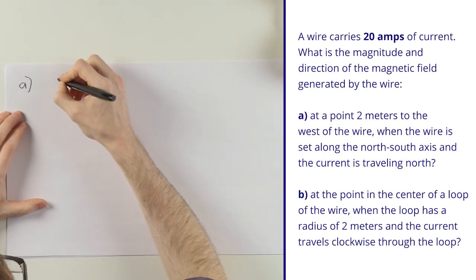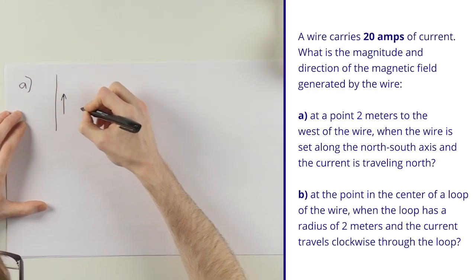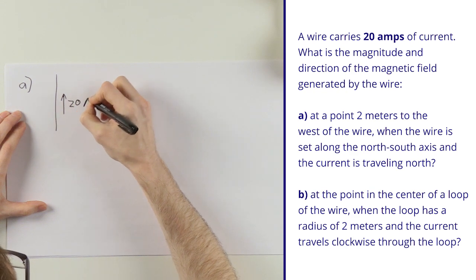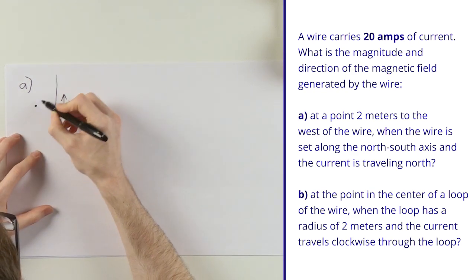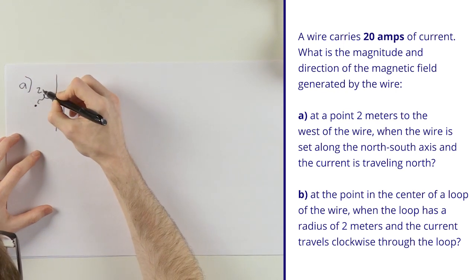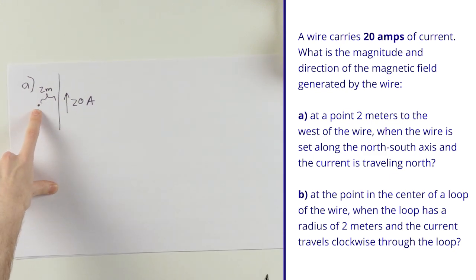Part a gives me a wire with a current moving up, moving to the north, 20 amps of current. And it's asking me what is the magnitude and the direction of the magnetic field right there, two meters to the west.